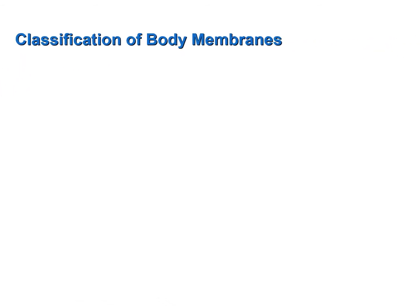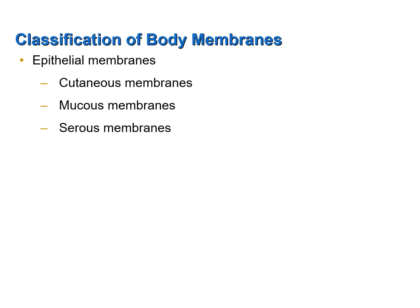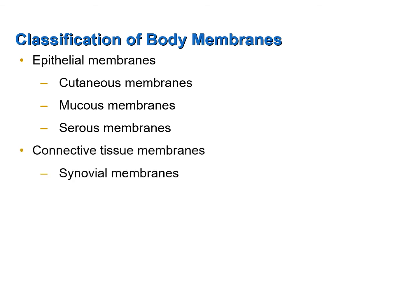Membranes fall into two categories or classes. Epithelial membranes include cutaneous membranes, mucous membranes, and serous membranes — all of which have an outer layer of epithelial tissue. Connective tissue membranes are composed exclusively of connective tissue. Synovial membranes are examples of connective tissue membranes and the only one we are going to study.